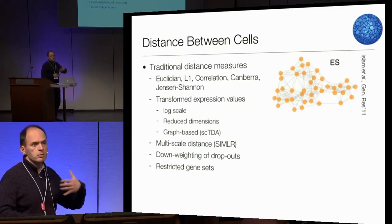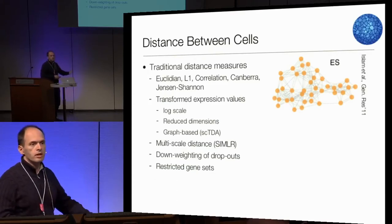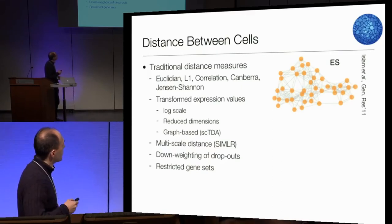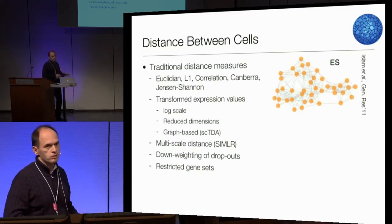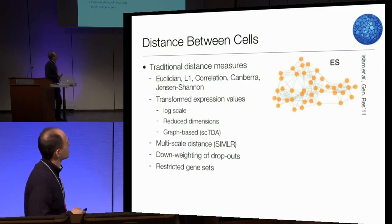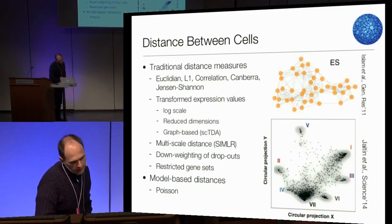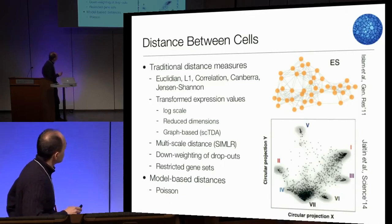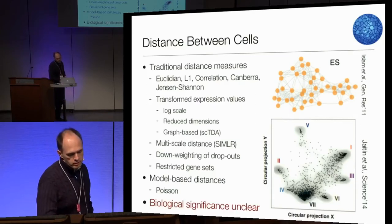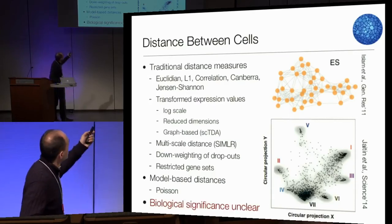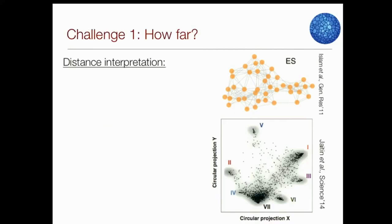It's worth noting that some distances can be modified by weighting certain errors or measurements expected to be errors. Feature selection — focusing on a particular subset of genes — is also very common. There are also model-based distances, from Iramid's lab, based on Poisson measurement models. Given this list of distances and options, it's actually unclear which one gets closer to biological significance and which part of biology each might emphasize. The first challenge is basically how to interpret these distances.